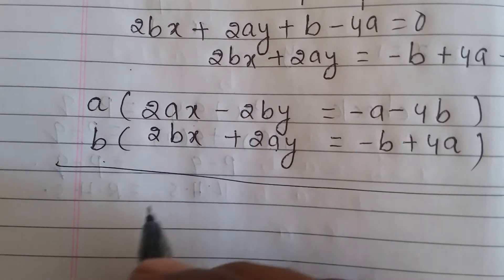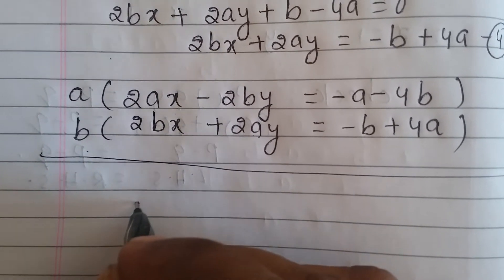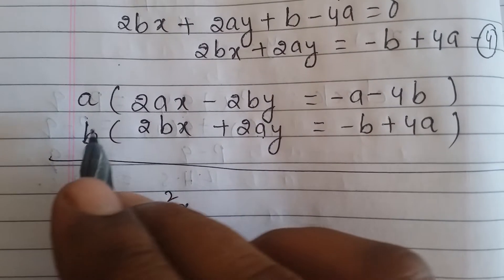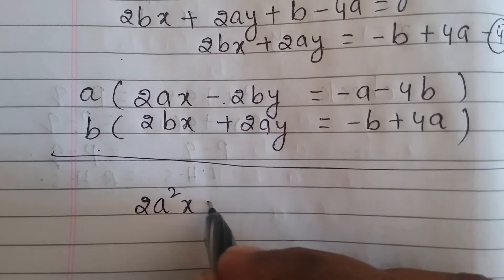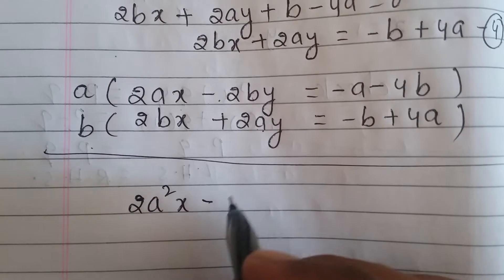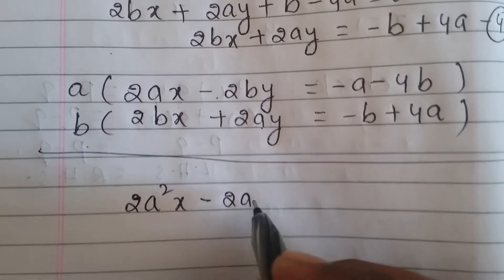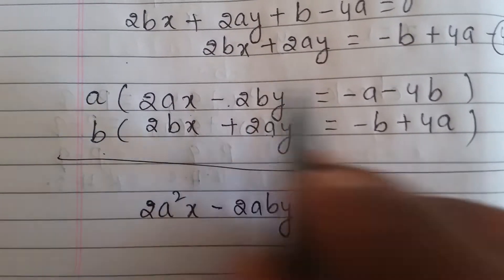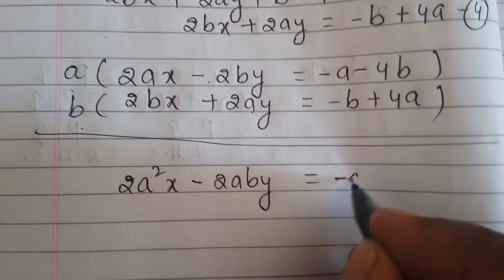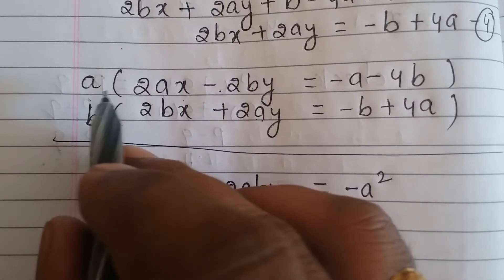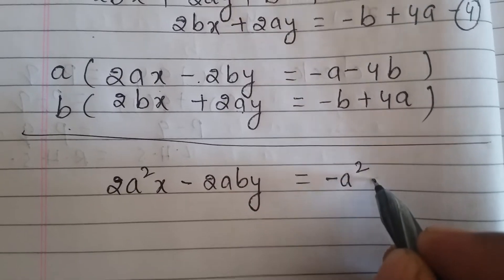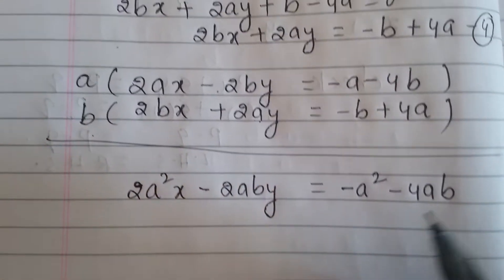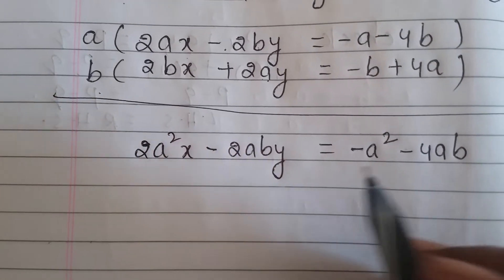After multiplication of equation three by a: a into 2ax gives 2a²x, plus into minus gives minus, a into 2by gives 2aby. On the right side: a into minus a gives minus a², and a into minus 4b gives minus 4ab. So multiplication with a is completed.